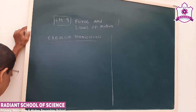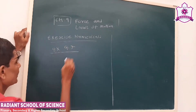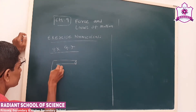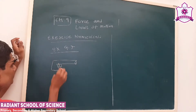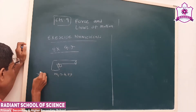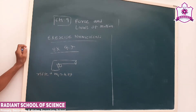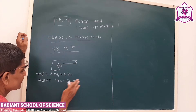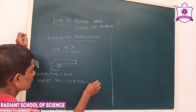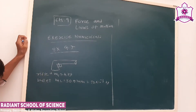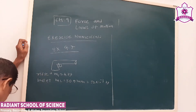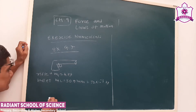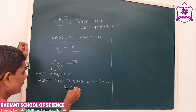Exercise number 9.7: From a rifle of mass 4 kg, a bullet of mass M2, that is 50 grams, is fired. Calculate the initial recoil velocity of the rifle. The velocity of the bullet is 35 meters per second. To calculate the initial recoil velocity, we use the law of conservation of linear momentum.